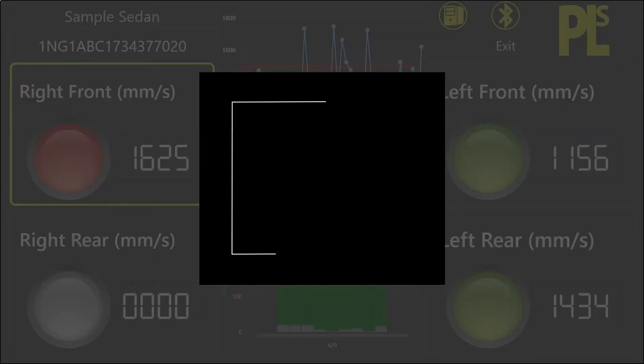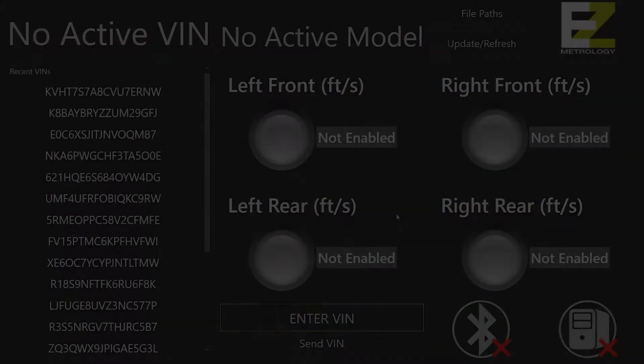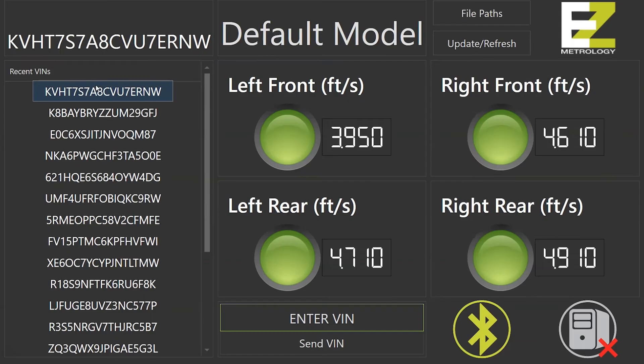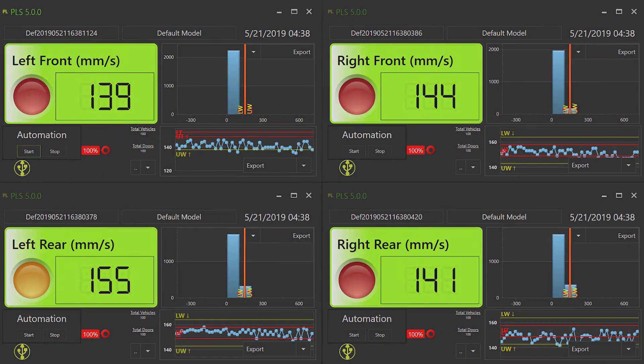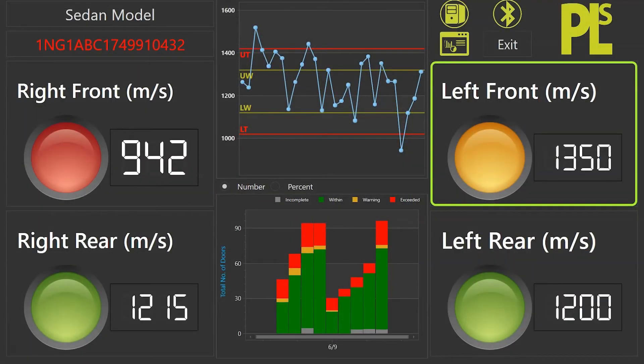PLS is our production line solution software which expands EZSpeed use for a production environment with a database for storing measurements and can integrate with other databases. It also offers a fully customizable interface with many graphs and reports for at-a-glance quality tracking.